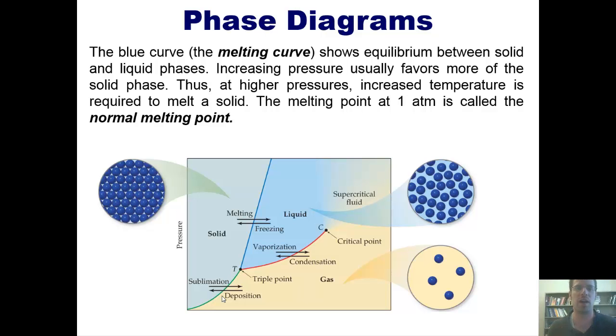Increasing pressure usually favors more of the solid phase. Thus, at high pressures, increased temperature is required to melt a solid. The melting point at one atmosphere is called the normal melting point.